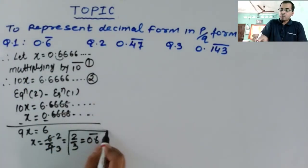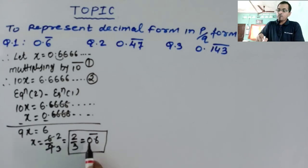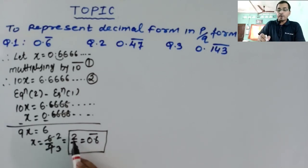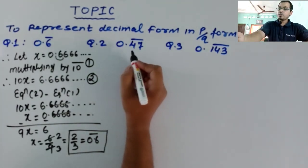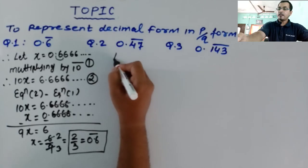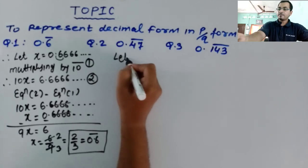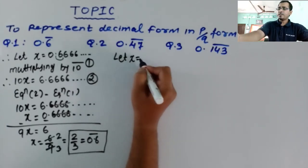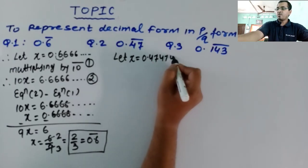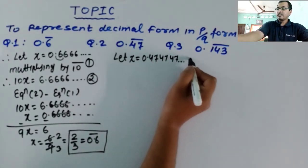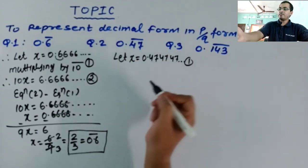So 0.6 bar can be written as 2 by 3. In the second question, the same process applies. Let x is equal to 0.47474747 and so on. Consider this as equation 1.